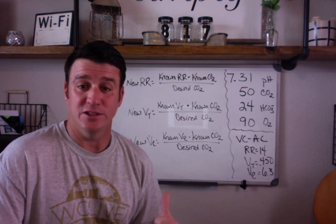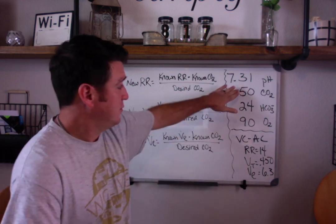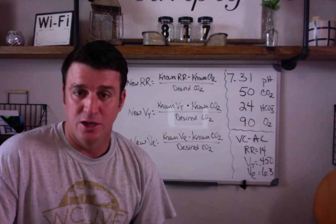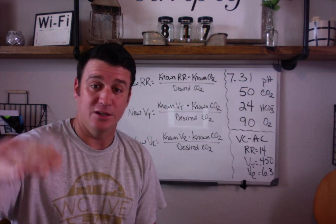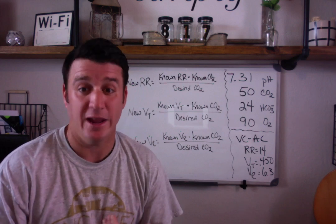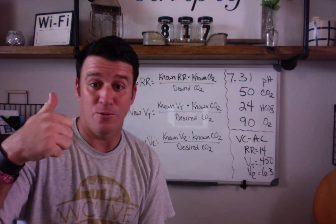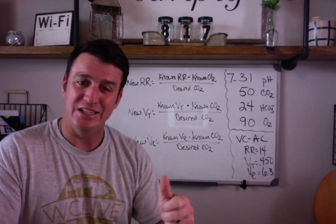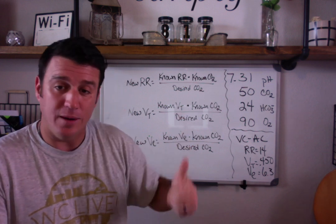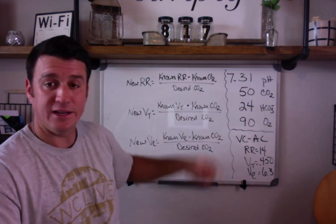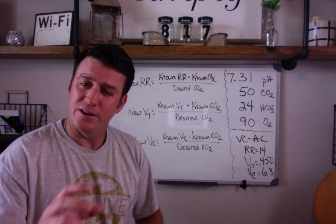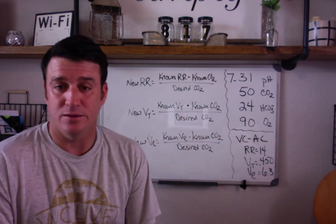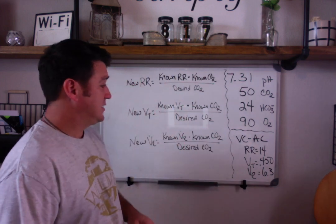Here's my first tip when using these formulas. If you need to get your CO2 from 50 down to 40 and you mix the numbers up, your answer will not make sense. You know going in that your CO2 is 50 and you need to get it to 40, which means your rate is going to have to increase. If the formula tells you to go from 14 down to 10, you did it wrong — because turning the rate down will make CO2 go up. When the answer doesn't make physiological sense, you've probably got your formula mixed up.